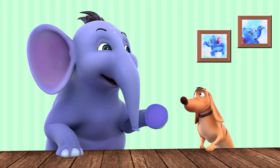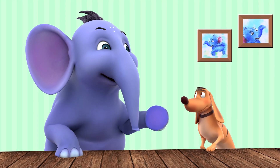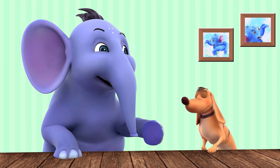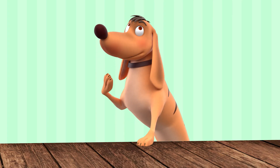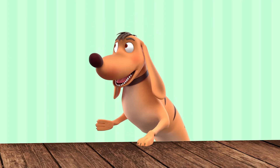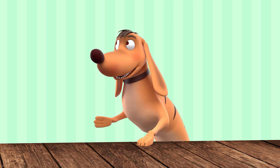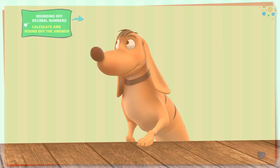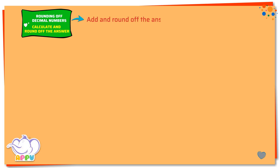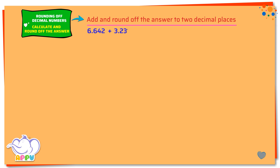Now, Tiger, let's see if you can calculate and round off the answer. Sounds challenging, but I'm sure I'll get it. Calculate and round off the answer. Add and round off the answer to two decimal places: 6.642 plus 3.231.